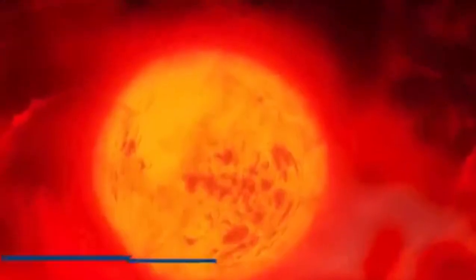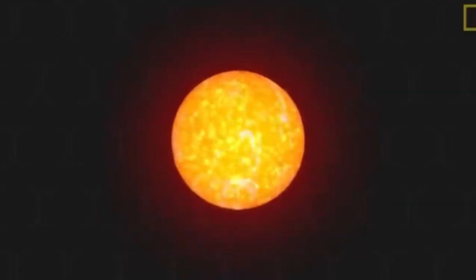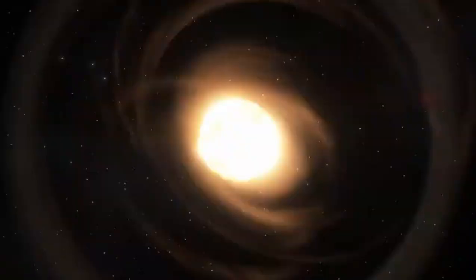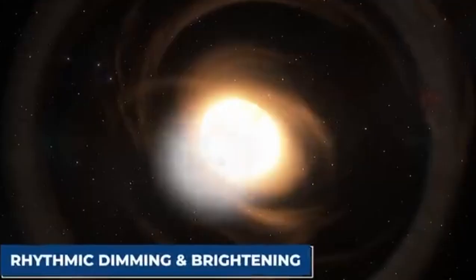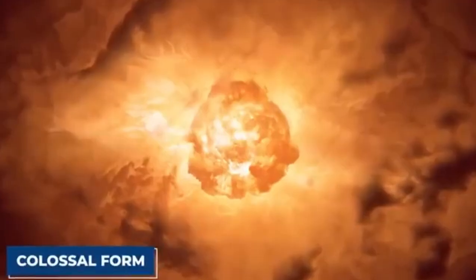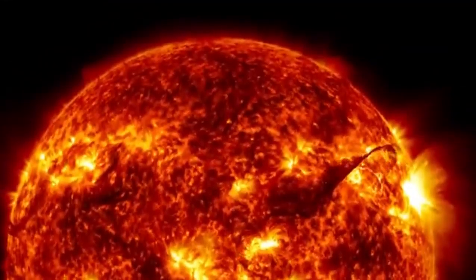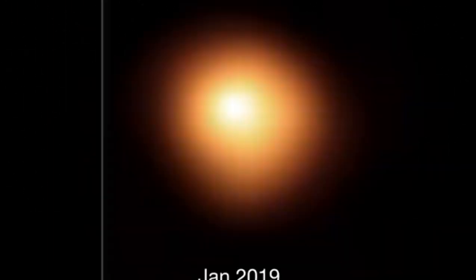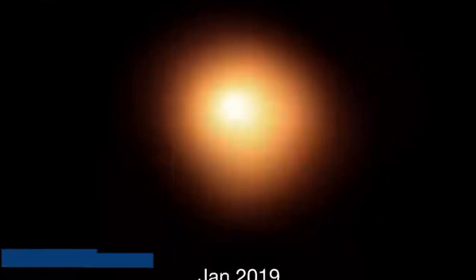This cooler temperature allows Betelgeuse to emit light at wavelengths that give it a red appearance. Adding to Betelgeuse's mystique is its historical color change. Ancient Roman and Chinese writings suggest that around 2,000 years ago, Betelgeuse was yellow. It was only in the 9th century that Arabic scholars first described it as red. The variable brightness of Betelgeuse is another intriguing aspect.